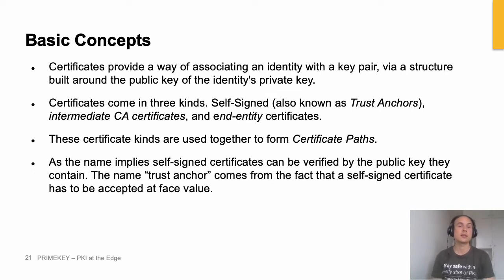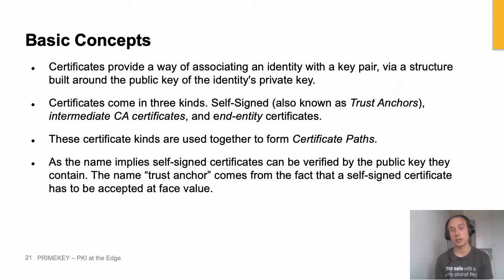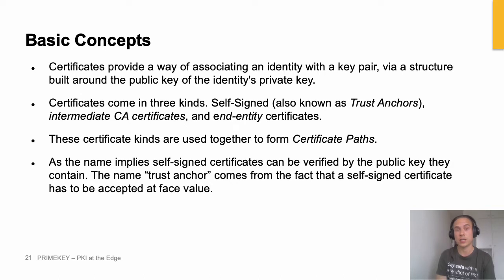That whole thing is then signed by the private key of an entity called a certificate authority. You can't change anything in the certificate after it has been signed because that would break the signature, and that would be detected by anyone who tries to validate the certificate. The certificate comes in three kinds depending on who owns the public key. You have certificates signed with the private key corresponding to the public key in the same certificate — those are called trust anchors or self-signed certificates.